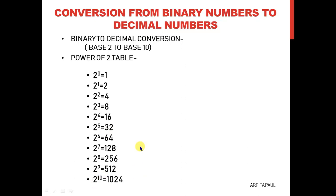So how will you memorize this? Let me tell you an easy trick. Anything to the power of 0 is 1 — either it is 2 to the power of 0 or 3 to the power of 0 or any value to the power of 0 is 1. And anything to the power of 1 is that number itself, so 2 to the power of 1 means 2.